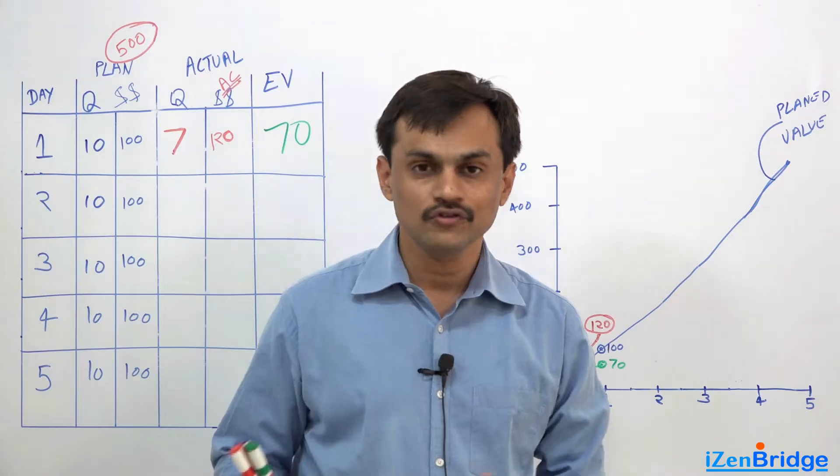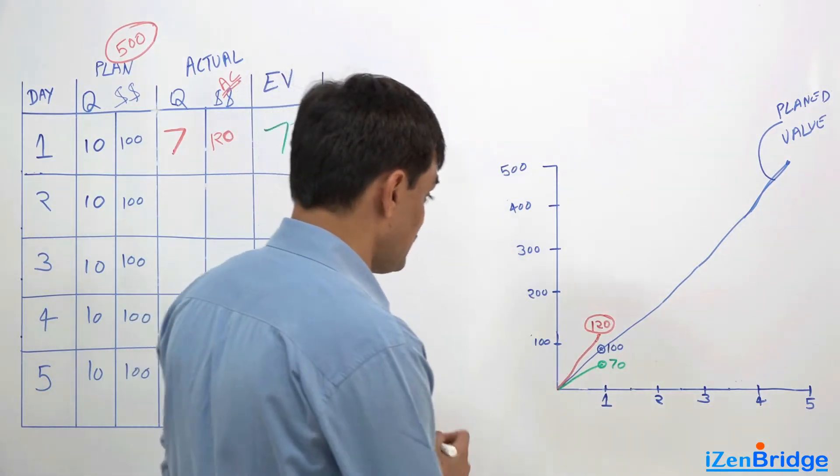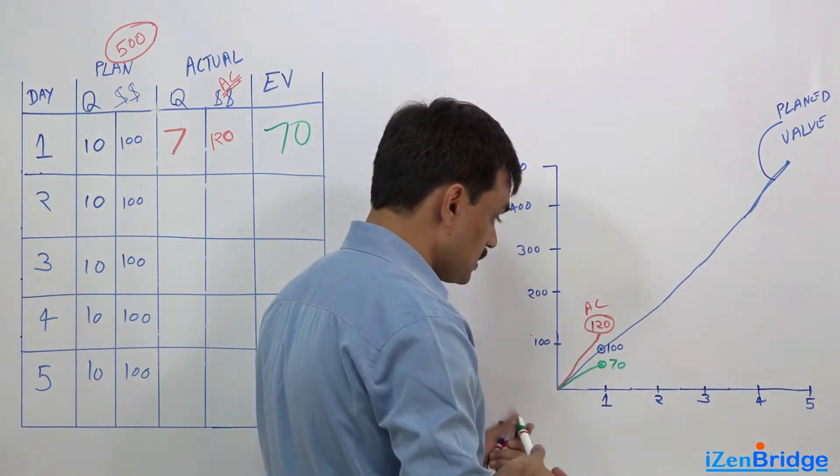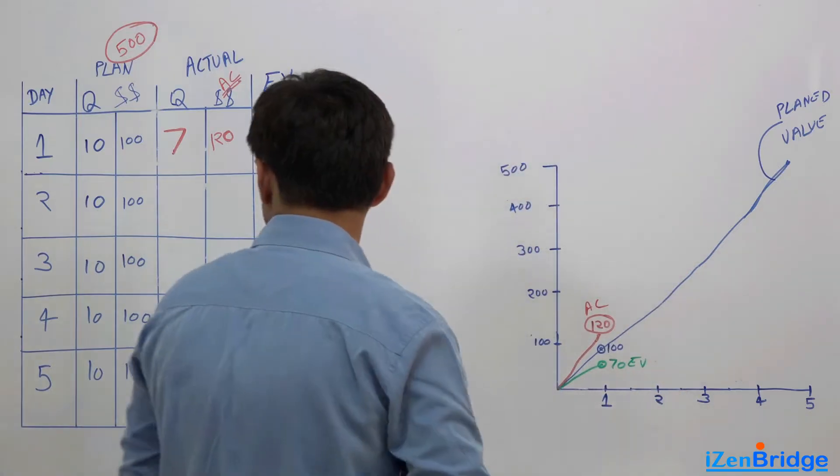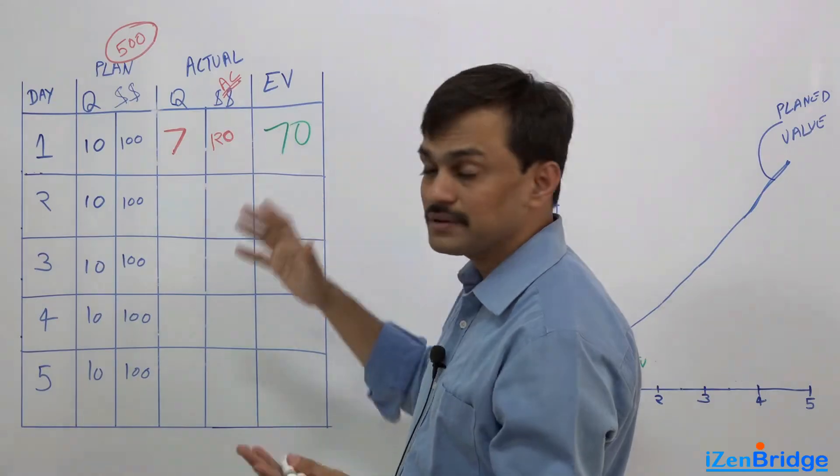So, let us take this understanding of earned value forward. As we saw, that red line is indicating actual cost, the green line is representing earned value, and blue line remains as planned value. So what we got, we earned $70 from day 1.